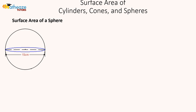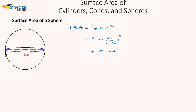Now we're going to apply that to an actual sphere. The total surface area equals 4πr squared. We have a diameter of 15 centimeters, so our radius is half of that. Therefore: 4 times π times (15/2) squared, which is 4 times π times 225 over 4, giving us 225π square centimeters.